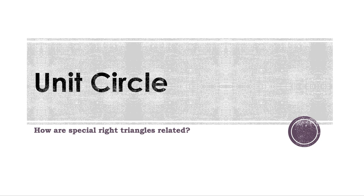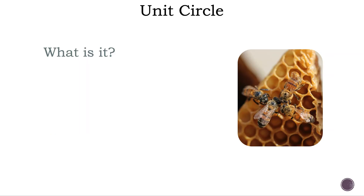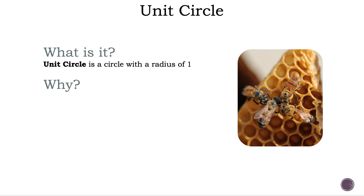Unit circle. How are special right triangles related? What is it? The unit circle is a circle with a radius of 1. Why? It helps to find different lengths and angles.